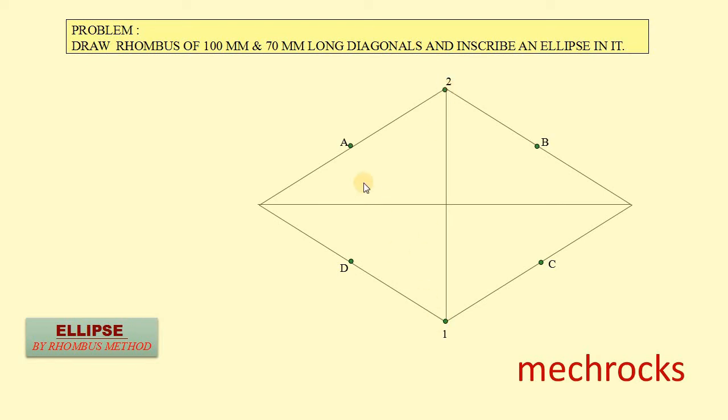Now join 1 with A and 1 with B. 2 with D, 2 with C. We locate this point and this point. We name it as 3 and this as 4. Now, listen carefully.